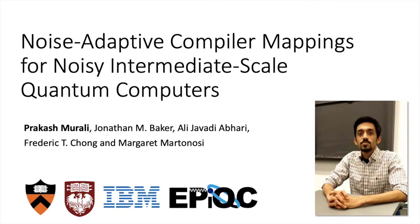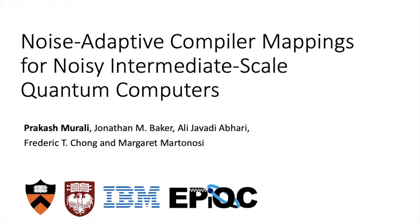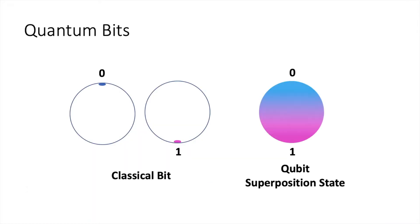Hi, my name is Prakash and I'm going to be talking about building a compiler for a quantum system. Quantum computers are composed of quantum bits or qubits. Qubits can have a zero or one value like classical bits, but they can also be in a superposition state — a special combination of these two values.